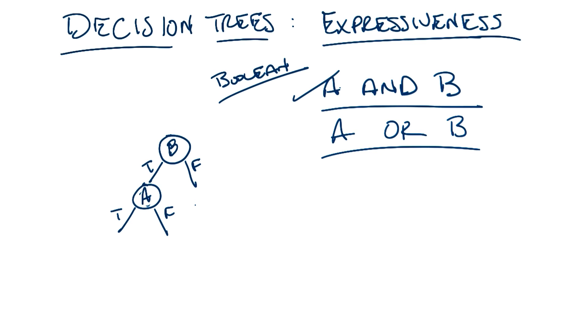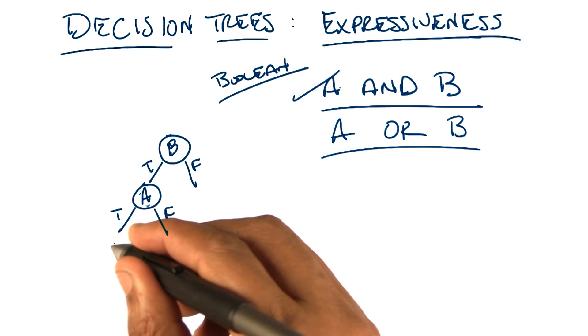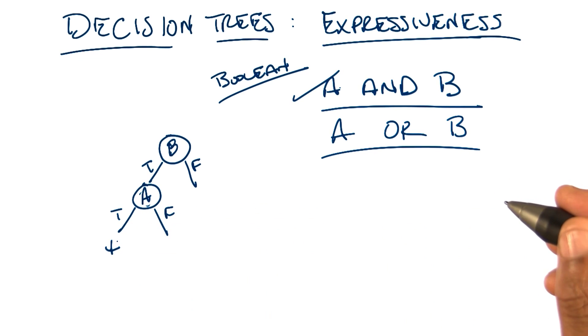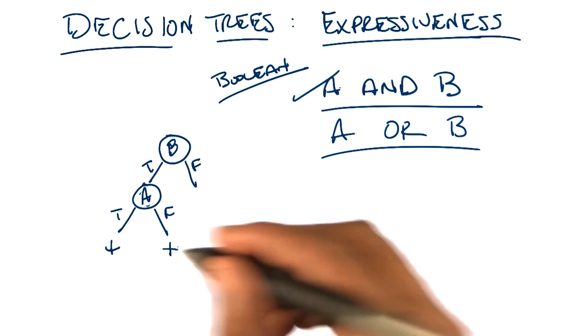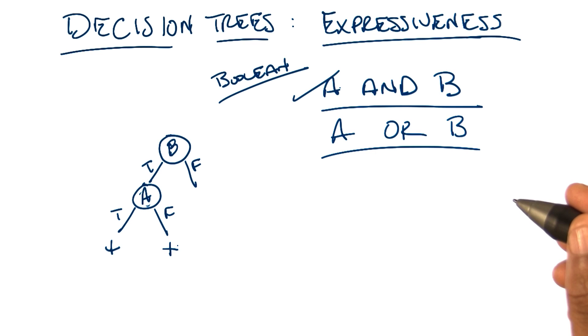So if B and A are both true, so the left branch, then the leaf should be plus. Yes. And if B is true and A is false, then the tag should be plus. Yes. And if B is false, I want to say false, but we don't know, because A could be true. And A or B is true if either of the two of them are true.